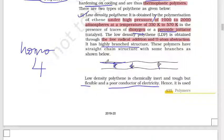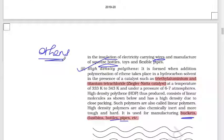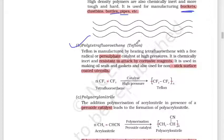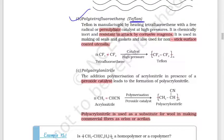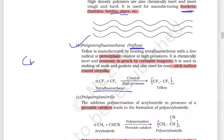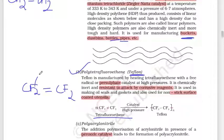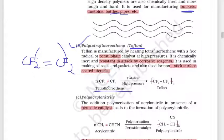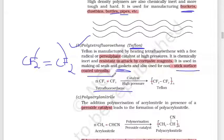The monomer for both LDP and HDPE is ethene, CH2=CH2. Next is polytetrafluoroethylene, also known as Teflon. Using a persulfate catalyst, tetrafluoroethylene (CF2=CF2) undergoes polymerization to form poly(tetrafluoroethylene), shortened as Teflon.